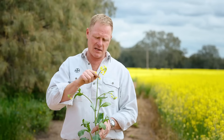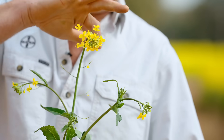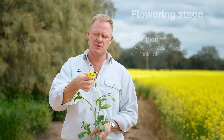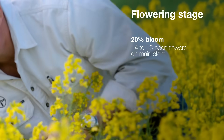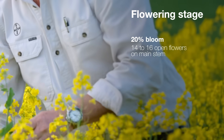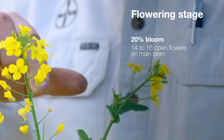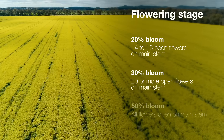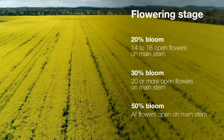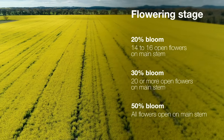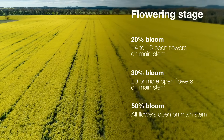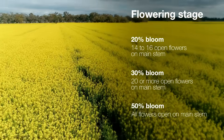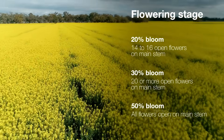What we do is calculate each of these open flowers or pods: we want to get to 20% bloom, which is calculated by 14 to 16 open flowers on that main stem; 30% is 20 flowers or more open; and 50% bloom is represented by all flowers being open on that main stem. And really at that 50% bloom, the crop should be at its most intense yellow.